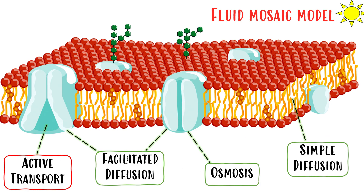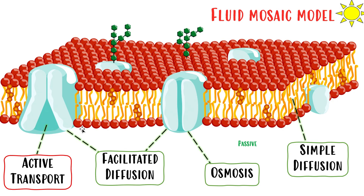These three — simple diffusion, osmosis, and facilitated diffusion — fall under the category of passive transport. All of these require no energy, no ATP from the cell at all. They happen very naturally and very easily. Active transport, on the other hand, is its own category. It requires energy — it requires ATP — so it's quite different from the other three.